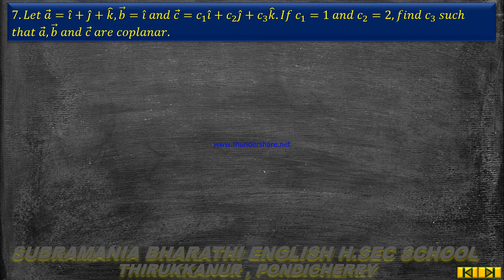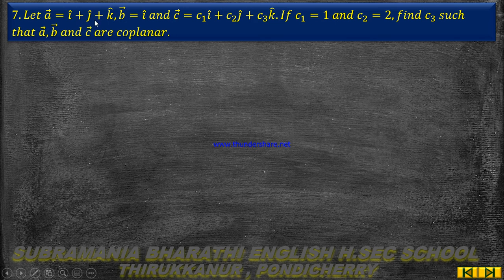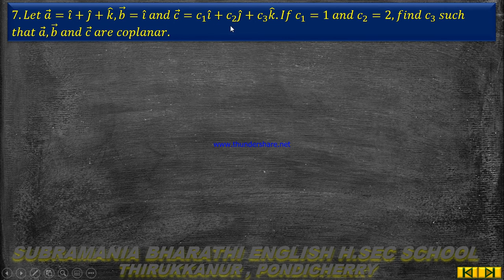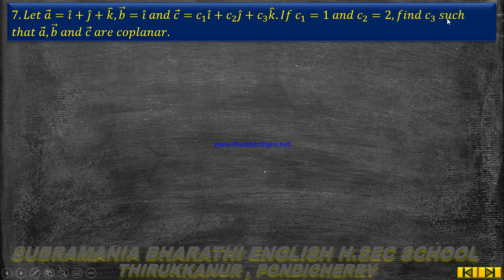Chapter 6, Exercise 6.2, Question No. 7. Let A vector equal to I cap plus J cap plus K cap, B vector equal to I cap, and C vector equal to C1 I cap plus C2 J cap plus C3 K cap. If C1 equal to 1 and C2 equal to 2, find C3 such that A vector, B vector, and C vector are coplanar.